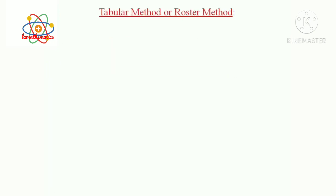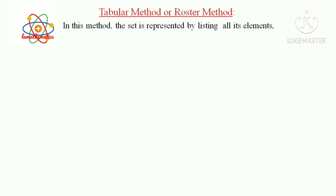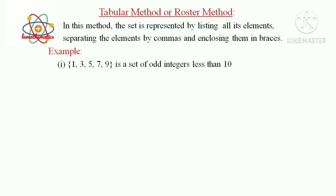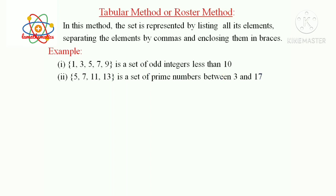Tabular Method or Roster Method: In this method, the set is represented by listing all its elements, separating the elements by commas and enclosing them in braces. Here, list all the elements without repeating. For example, the set {1, 3, 5, 7, 9} is the set of odd integers less than 10. Second example: the set {5, 7, 11, 13, 17} lists all elements between 3 and 17. In both examples, we list all elements without repeating.